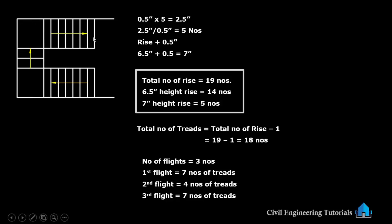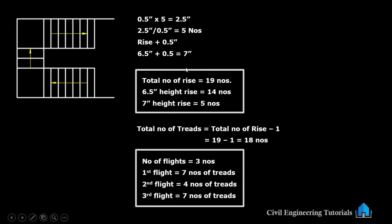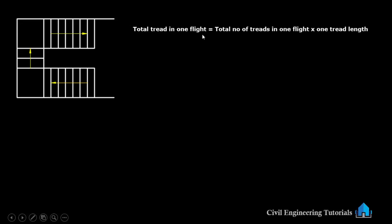Total number of risers: 19 numbers. Total number of treads: 18 numbers. Number of flights: 3 numbers. Total risers in 3 flights: 19 numbers. Total treads in 3 flights: 18 numbers. First flight: 7 treads. Second flight: 4 treads. Third flight: 7 treads. Total treads: 18. Riser breakdown: 6.5 inch rise — 14 numbers; 7 inch height rise — 5 numbers.